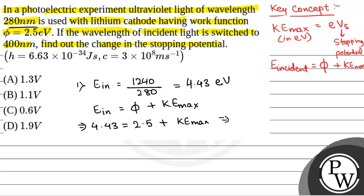From here, we will have KE_max that is equal to kinetic energy maximum 1.93 electron volts. Therefore, stopping potential Vs will be equal to 1.93 volts. So, this will be the stopping potential in the first case.